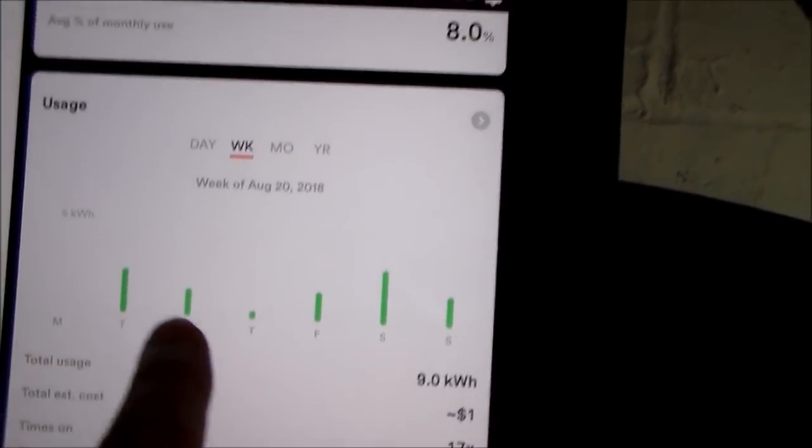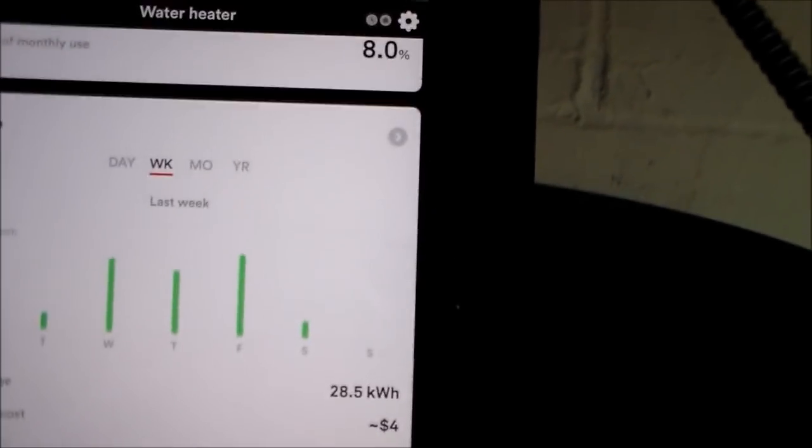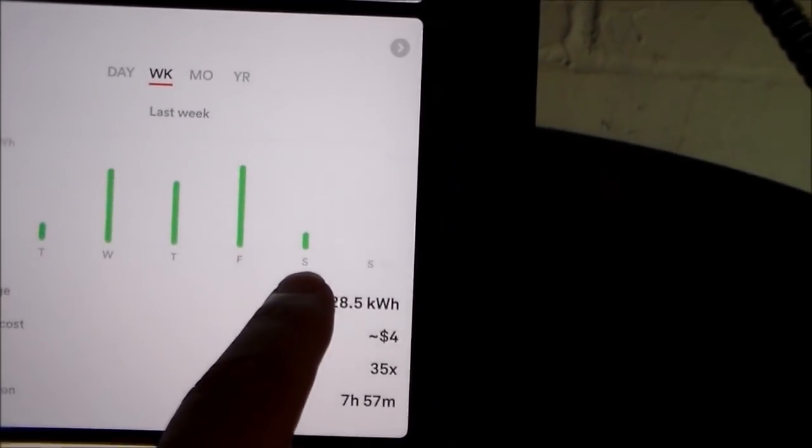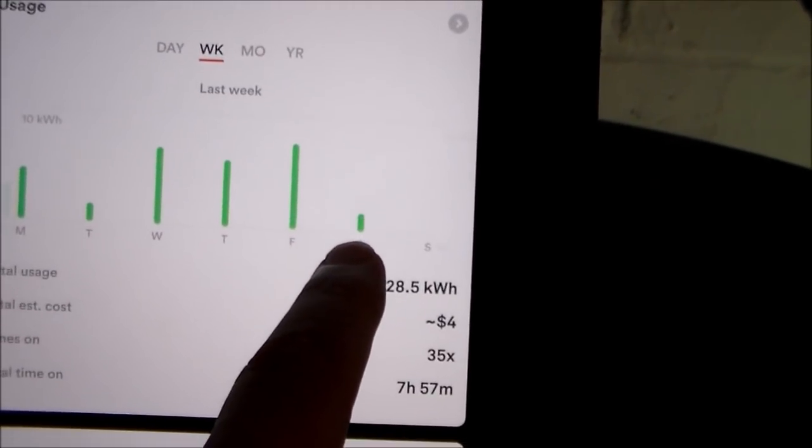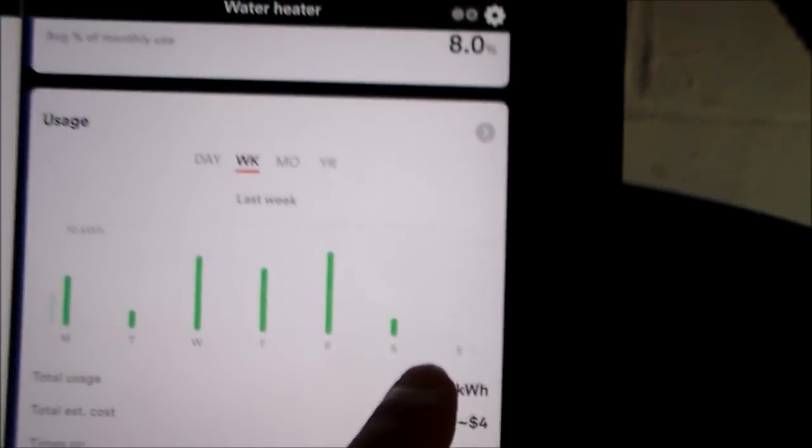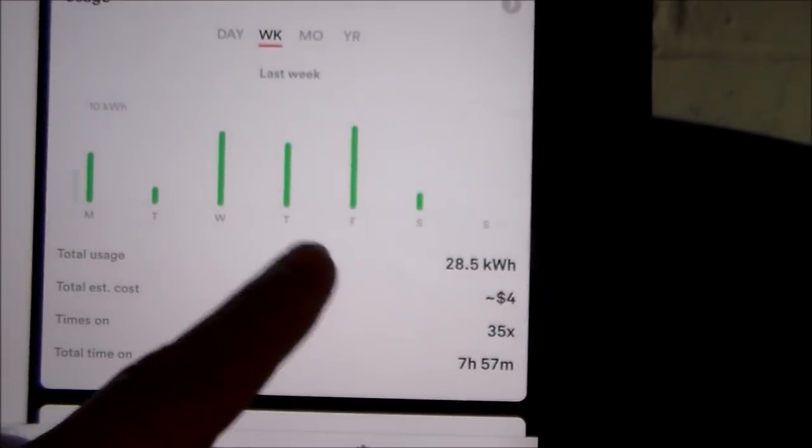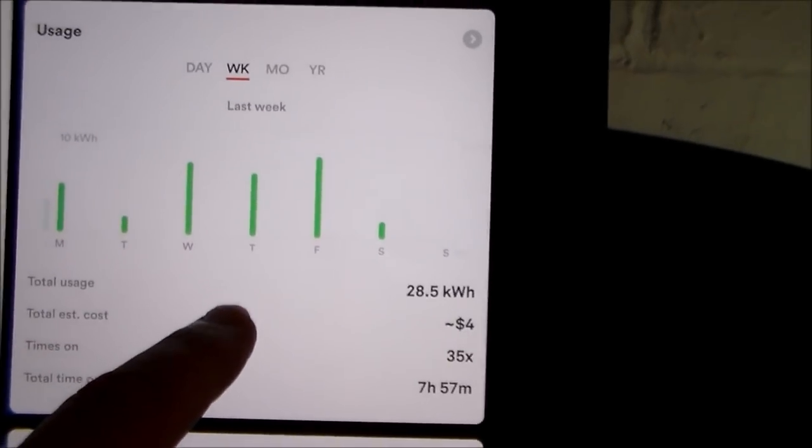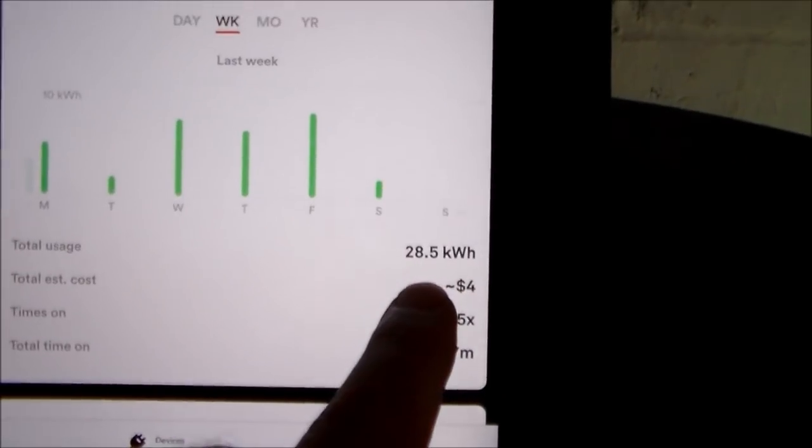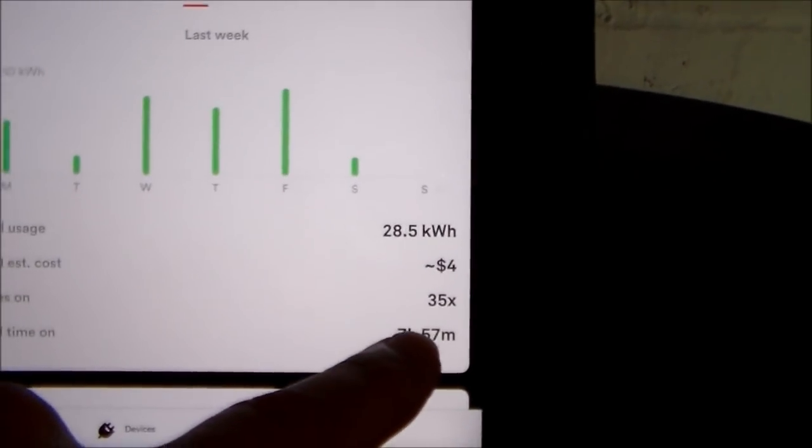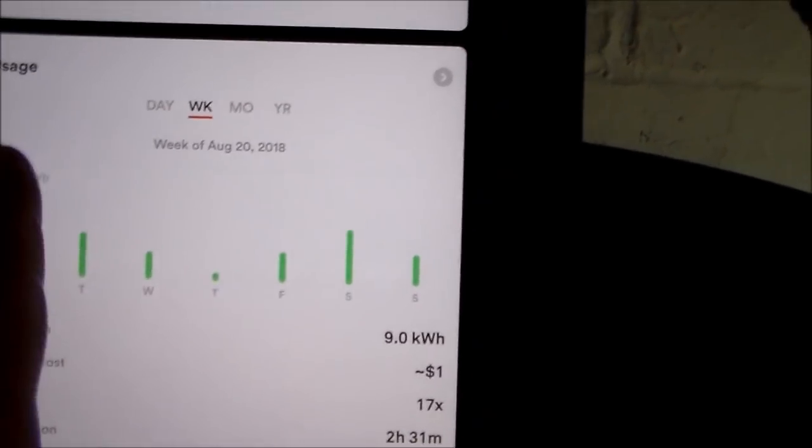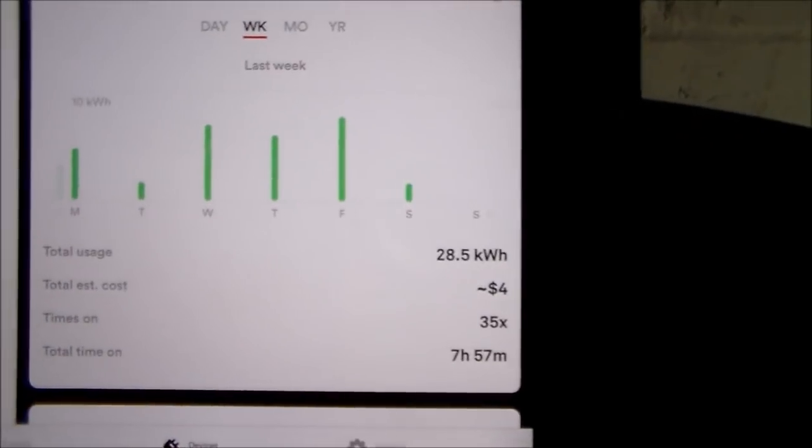Let me go to the last week and show you a comparison. This is Saturday when I installed the controller, and this is the Sunday it didn't come on at all. Here's the normal usage of the hot water tank. Last week we used about 28 and a half kilowatts at four dollars, and it came on 35 times. Compared with this week, only nine kilowatts. Right away I'm seeing this device is working out.